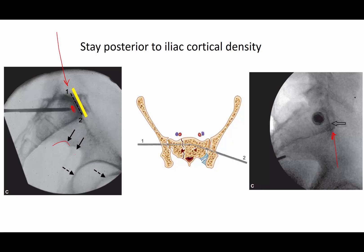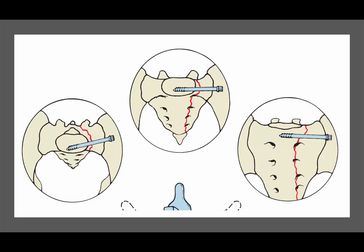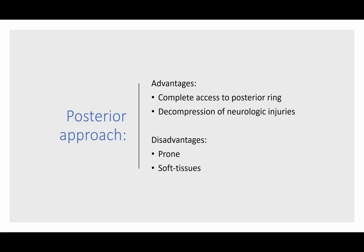Here you can see an example of the sciatic notches — not perfectly superimposed, so it could be a slightly better lateral image. When you place iliosacral screws, you'll be looking at inlet, AP, and outlet views on standard imaging. Keep in mind, standard fluoroscopy imaging can still hide an errant screw, so you still need some kind of 3D imaging — by CT scan or intraoperative 3D fluoroscopy.